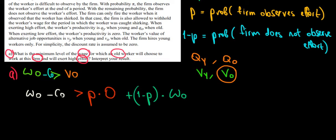Now it's a matter of math. WO minus the cost of effort must be greater than P times zero. That's just zero, so this term goes away. 1 minus P times WO is going to be WO when we open the brackets minus P times WO.